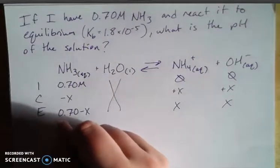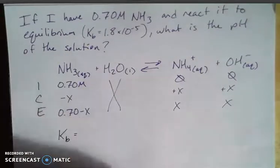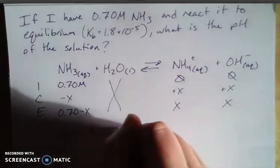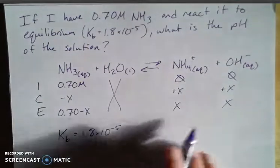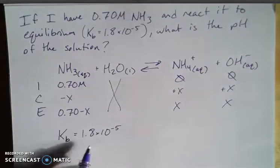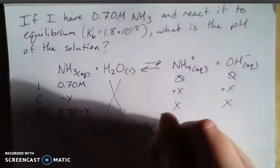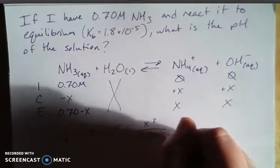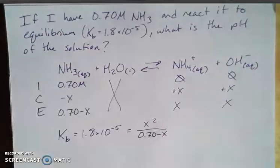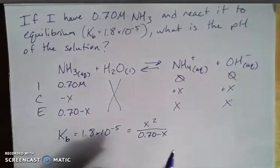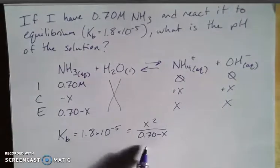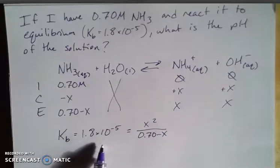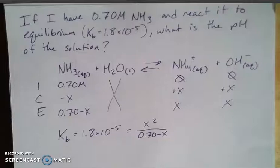When I set up my expression for Kb, it's equal to the 1.8 times 10 to the negative 5th, which we know is products over reactants. And since that's a small number, that means that this is a relatively weak base. It's going to be equal to my x squared for the 0.70 minus x. Now let's think about this x. If we look at the magnitude of the concentration compared to the magnitude of my equilibrium constant, there's a big enough difference that we can disregard this x, which is kind of nice.